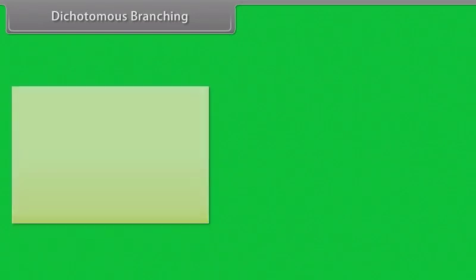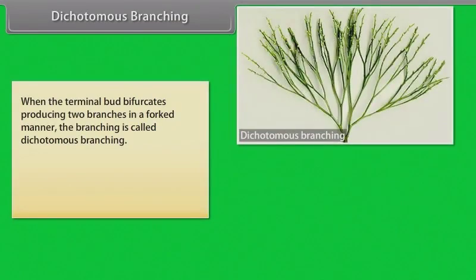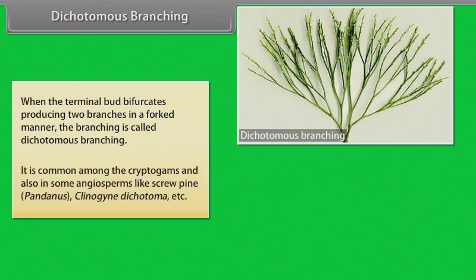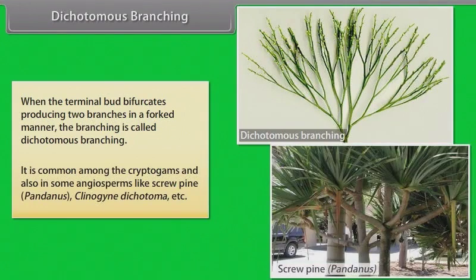In dichotomous branching, when the terminal bud bifurcates producing two branches in a forked manner, the branching is called dichotomous branching. It is common among the cryptogams and also in some angiosperms like Scaevola, Pandanus, Ctenogyne, Dichotoma, etc.